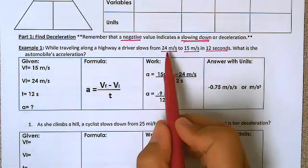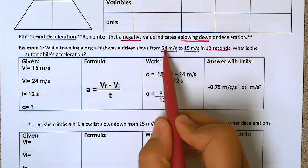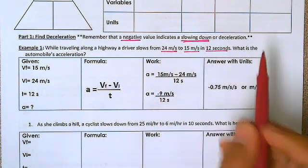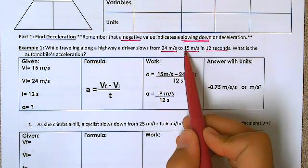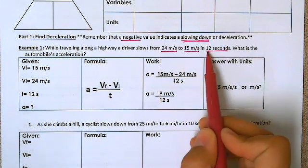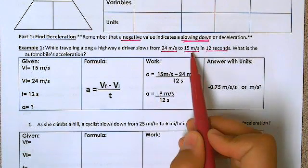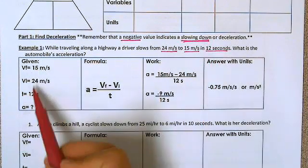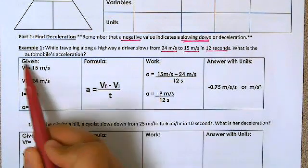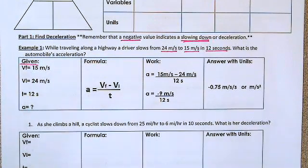So we have a starting velocity here of 24 and then it slows down to our ending velocity of 15 and the time it takes is 12 seconds. So we're going to take these three numbers and plug them in over here in this first box which is what's given in our problem.